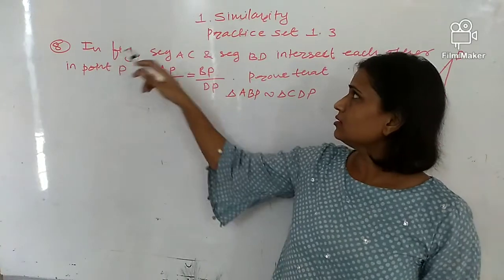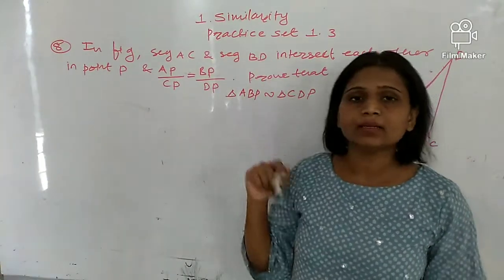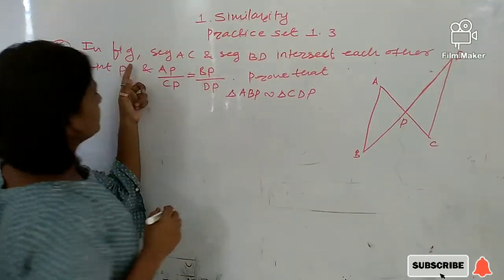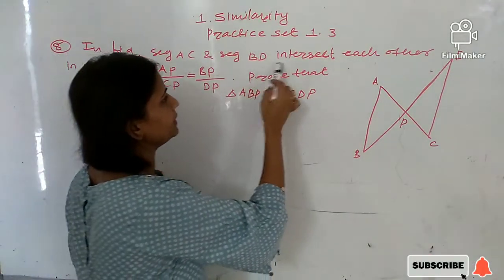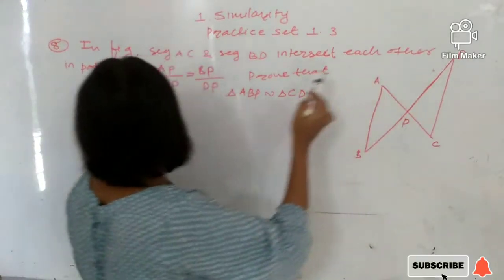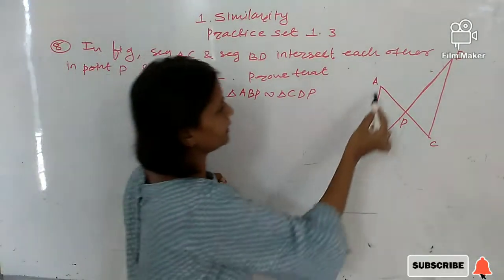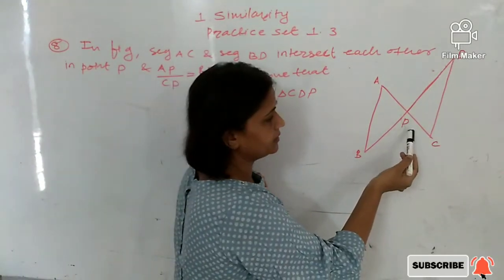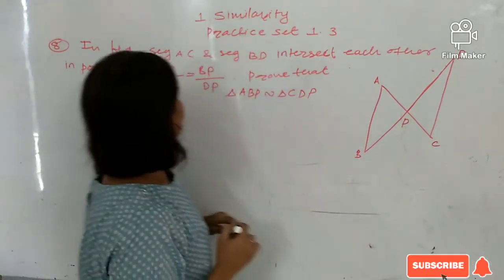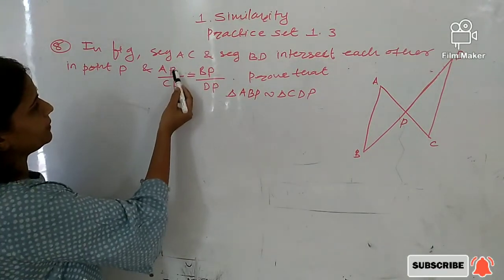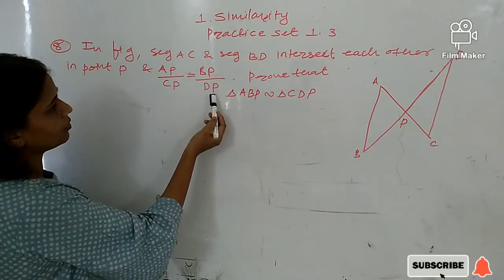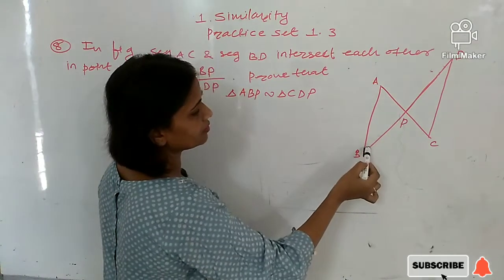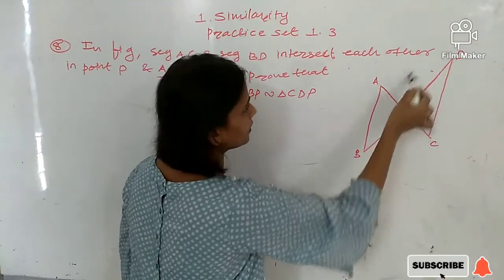This is question number 8 from Practice Set 1.3 of Similarity. In the figure, segment AC and segment BD intersect each other at point P. The ratio AP upon CP is equal to ratio BP upon DP.